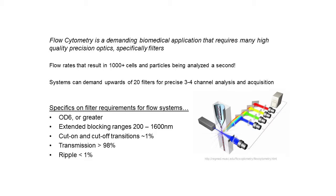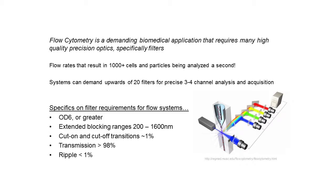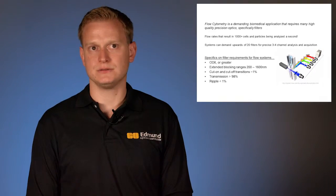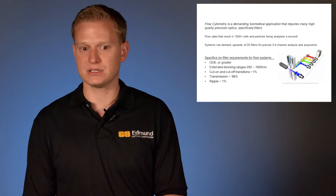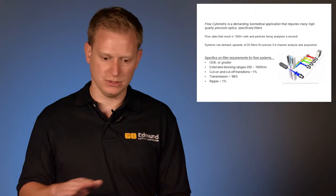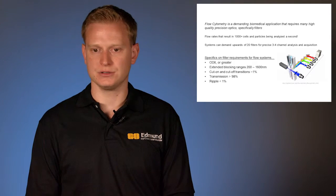Over 20 filters can be used in some of these systems in a three to four channel type of system. These filters are typically extremely highly specified on the OD6 or greater. Extended blocking ranges covering 200 to 1600 nanometers due to the fact that there are multiple channels and multiple excitation wavelengths. And the cut-on and cut-off transitions are roughly on the order of one percent or less. Transmission is greater than 98 percent. And your ripple needs to be extremely flat. It has to be on the order of one percent across the bandwidth.